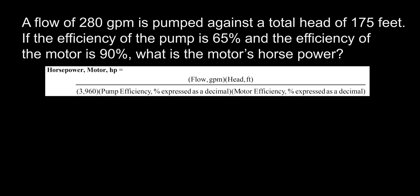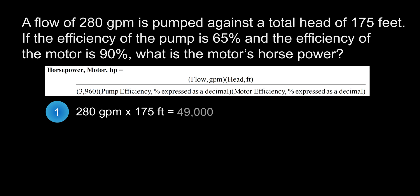Thankfully, we are given this formula for the exam. For the first step, we will solve for the top half of the formula. We will plug in 280 gallons per minute for flow and 175 feet for head, giving us 49,000. Units are not important here because we will be converting everything to horsepower.